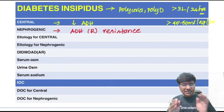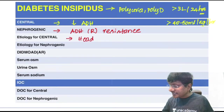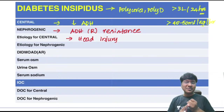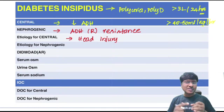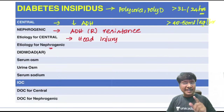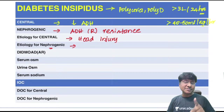For the etiology of central diabetes insipidus, one very important cause is head injury. Tumors like craniopharyngioma can also cause central diabetes insipidus. Infections like chronic meningitis and viral encephalitis are also responsible for central diabetes insipidus.